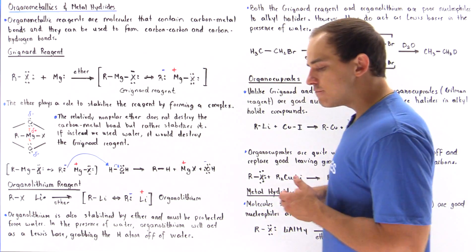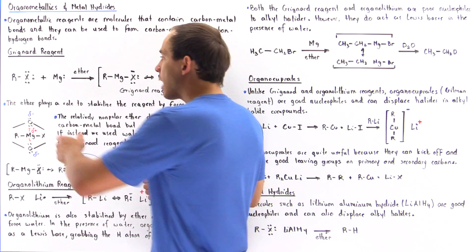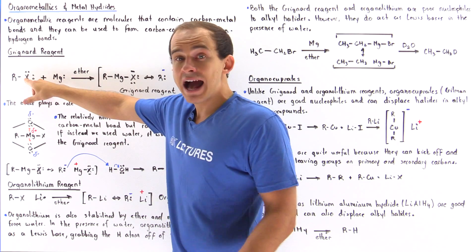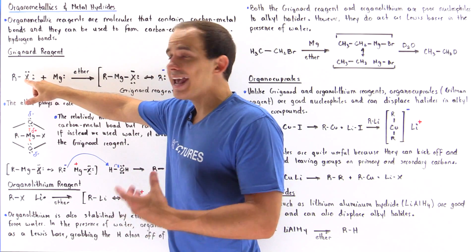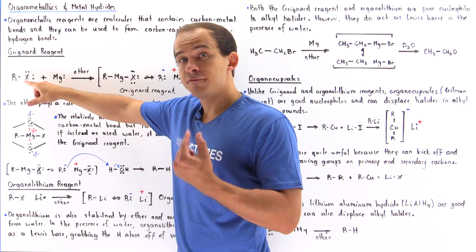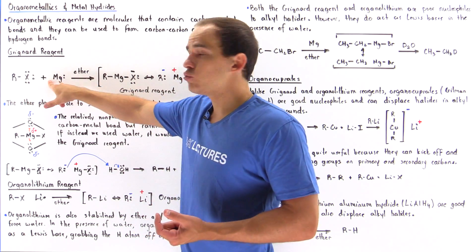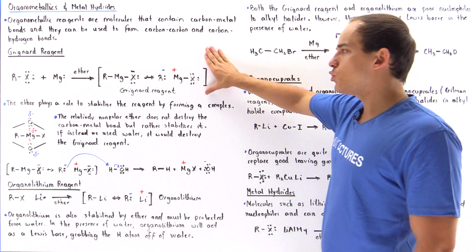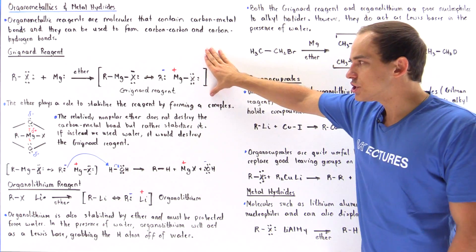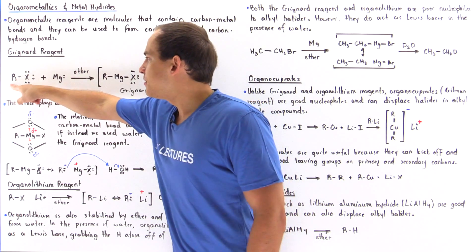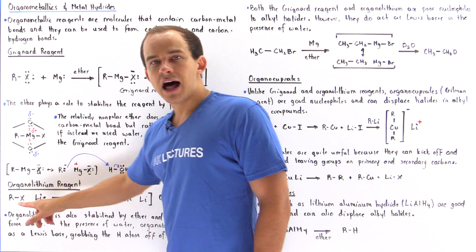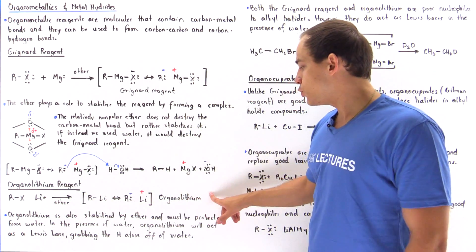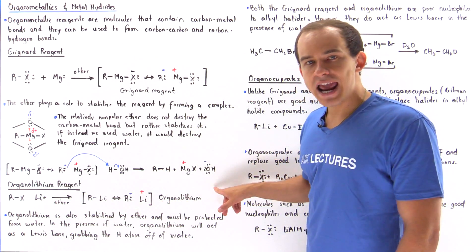Let's begin by discussing how we synthesize these reagents, starting with the Grignard reagent. If we have an organic halide — our alkyl halide — where this is the hydrocarbon group and this is our halogen (any halogen other than fluoride), and we mix it with magnesium metal in the presence of ether as a solvent, we produce the Grignard reagent. If we take this same alkyl halide and mix it with lithium in the presence of ether, we produce the organolithium reagent.